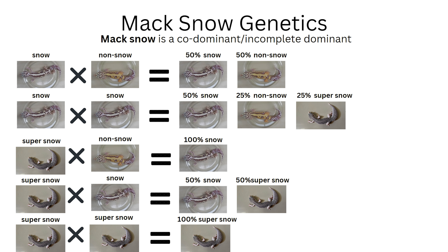What if you paired a super snow to a non-snow? All offspring will be snows, because super snows have two copies of the gene — just like how a visual recessive gene works. Now, if you pair super snow to a snow, 50% will be snow and 50% will be super snows. If both parents are super snows, all offspring will be super snows.